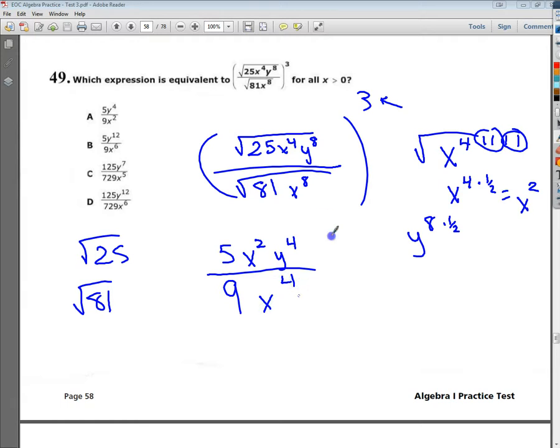Now, I'm going to raise that to the 3rd power. And I'm going to do that individually by term. So 5 to the 3rd power is 125, it's 5 times 5 times 5.